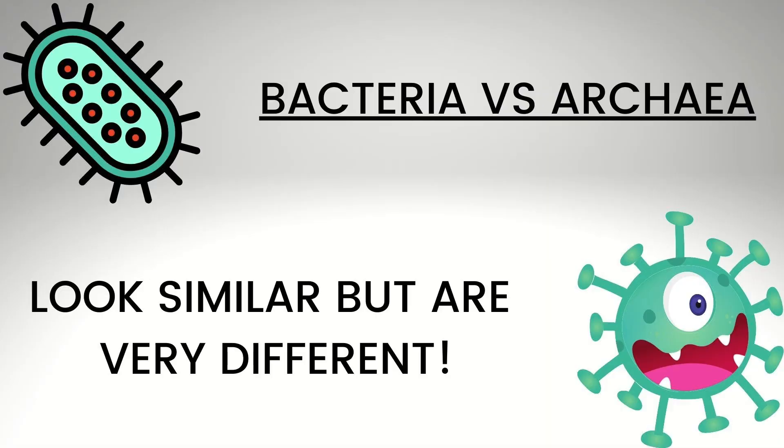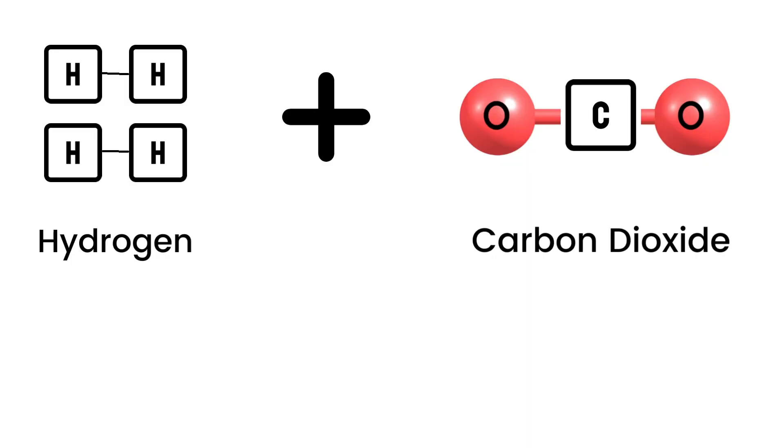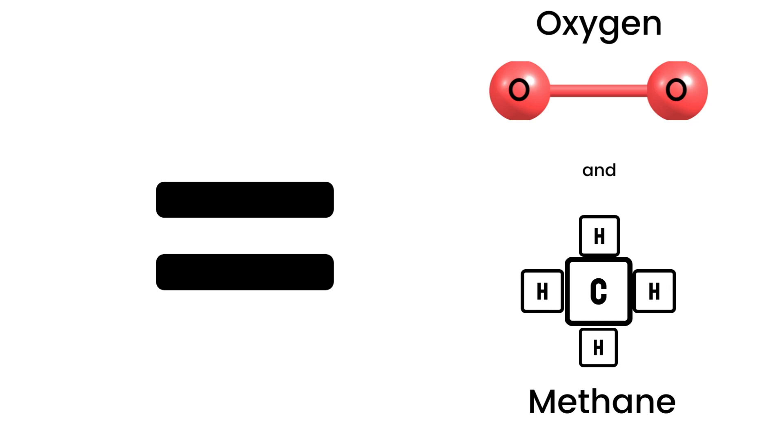Next up is methane dominant SIBO, also called IMO or intestinal methanogen overgrowth. This type of SIBO is not actually caused by bacteria — it's caused by a different type of single-cell organism called Archaea. This is a relevant fact because if we're trying to treat something with an antibiotic and it's not a bacteria, it's not going to work. Methane gas is formed when these Archaea take the hydrogen gas produced by fermenting bacteria, along with carbon dioxide, and form methane gas.